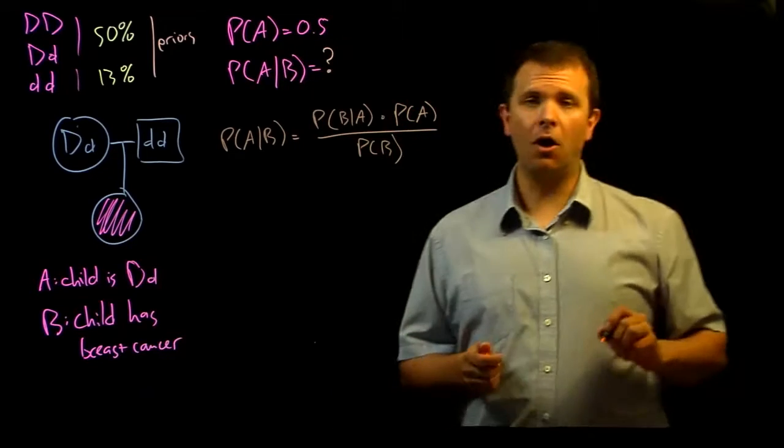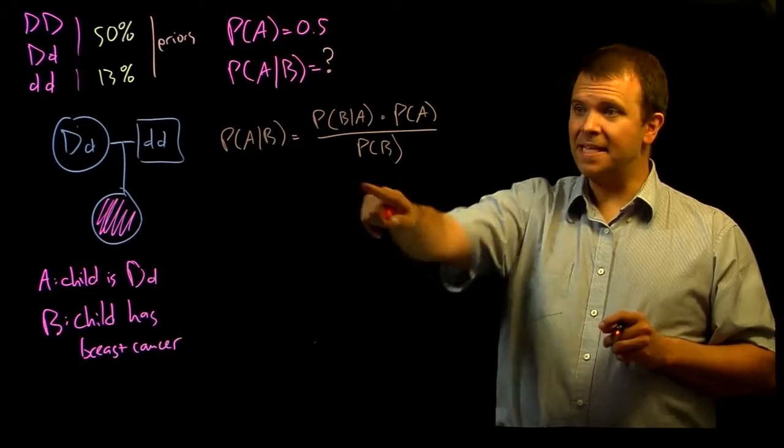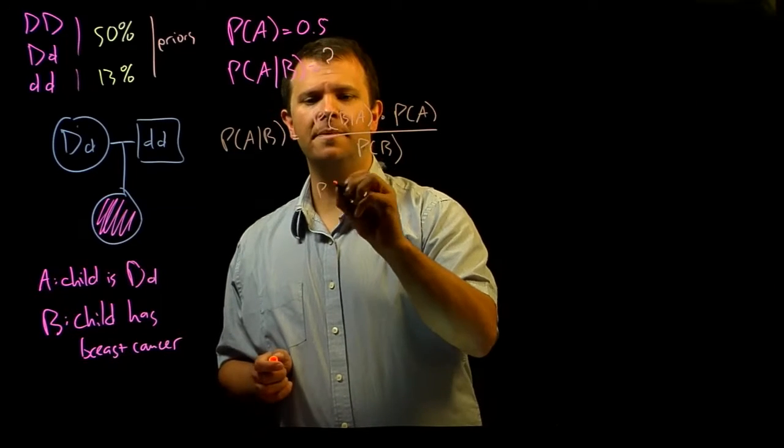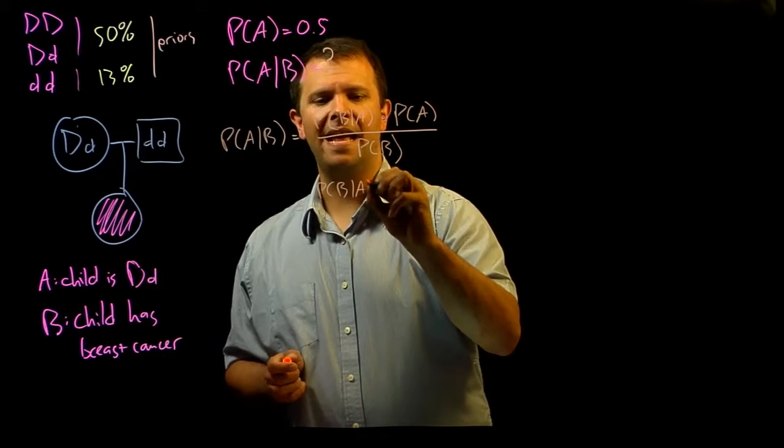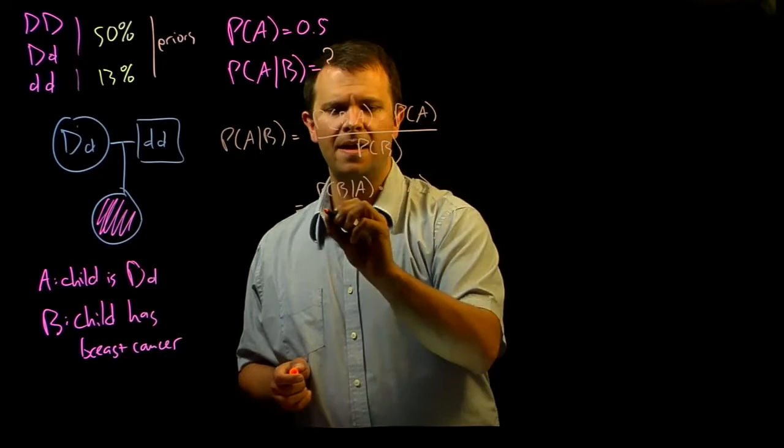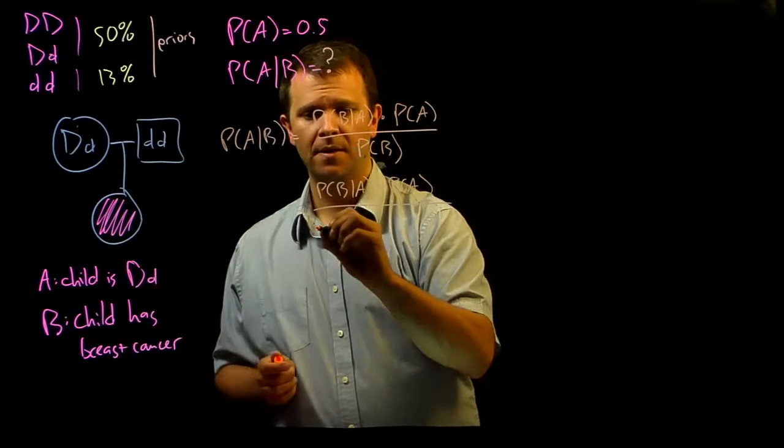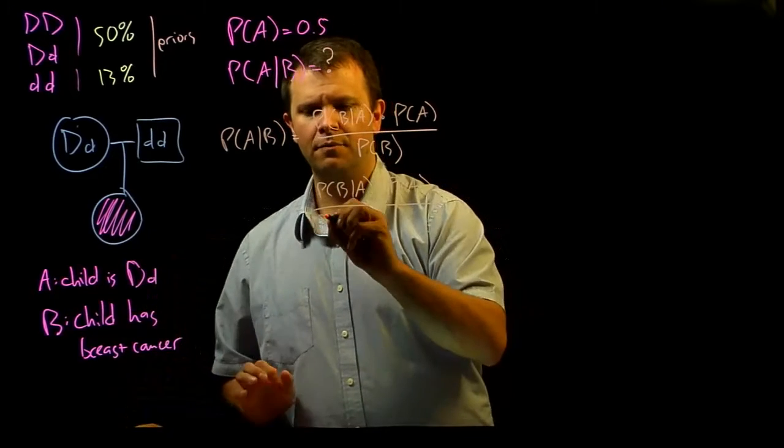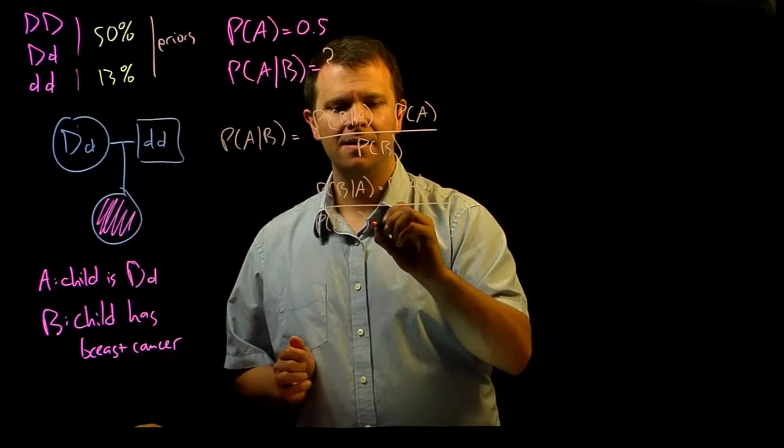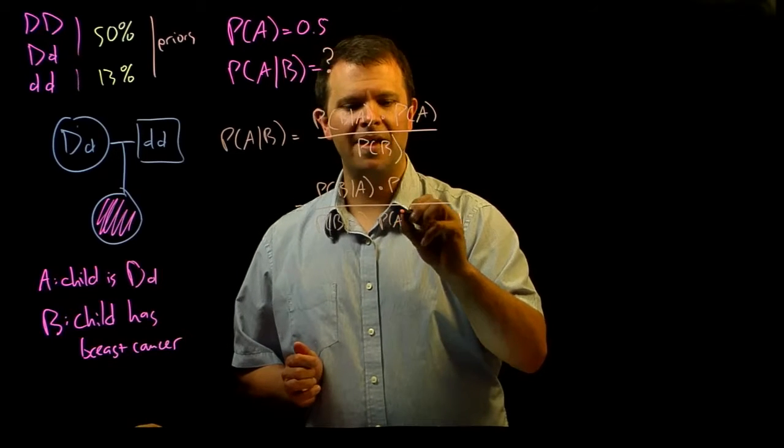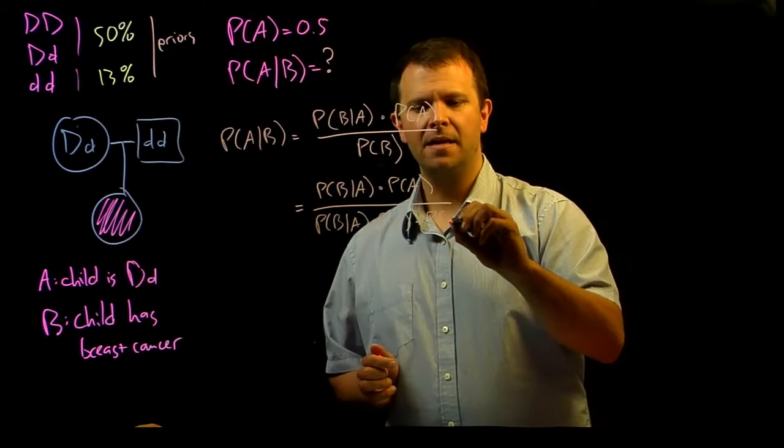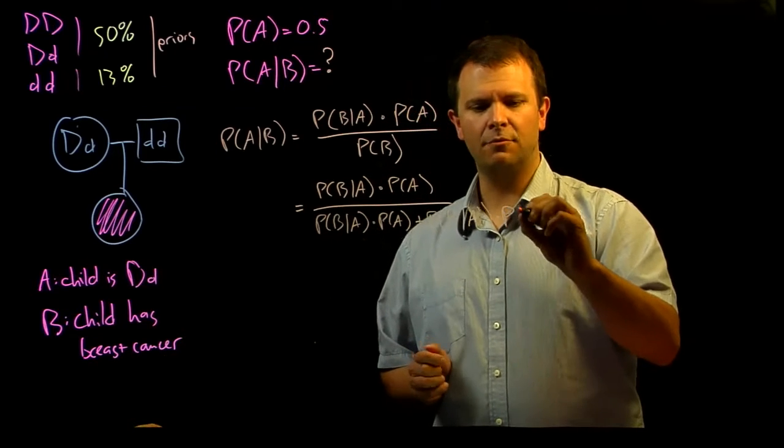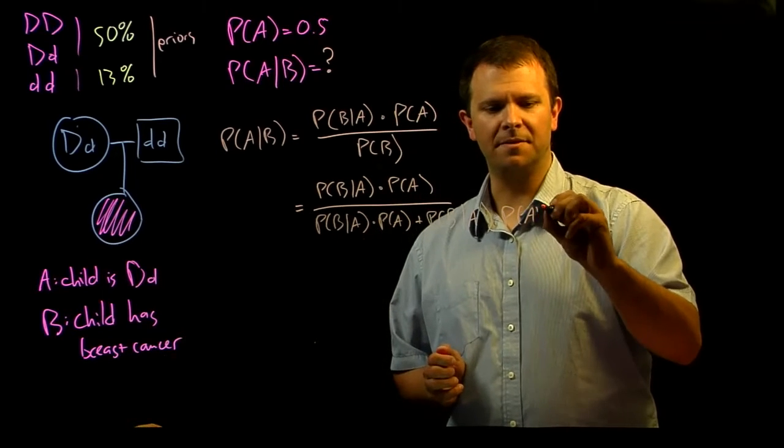And it's often useful to expand this denominator, so I'll rewrite this: the probability of B given A times the probability of A over the probability of B given A times the probability of A plus the probability of B given the complement of A times the probability of the complement of A.